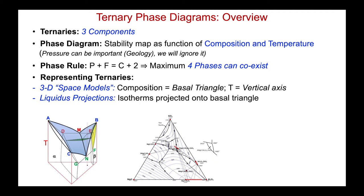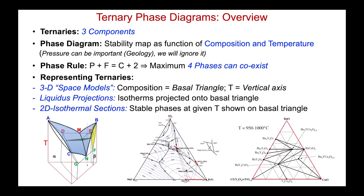We will also use liquidus projections, in which all of the various isotherms involving the liquid are projected onto the basal triangle, and we'll look at 2D isothermal sections where the stable phases forming at a given temperature are shown on that basal triangle. We'll begin with the 2D isothermal sections, restricting our considerations to solid-state equilibria.